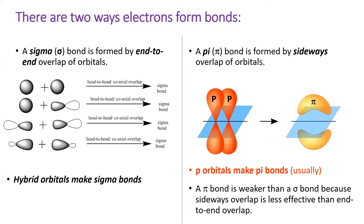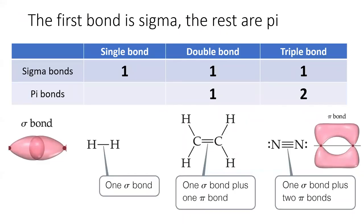Pi bonds also tend to be weaker than sigma bonds. The first bond formed between two atoms is a sigma bond, but each additional bond after the first is a pi bond. So a single bond is a sigma bond. A double bond is one sigma bond and one pi bond. A triple bond is one sigma bond and two pi bonds. Imagine the first bond is placed in the most obvious spot directly between the two atoms, but after that space is taken, each additional bond has to form above and below, or in front of and behind the atoms.